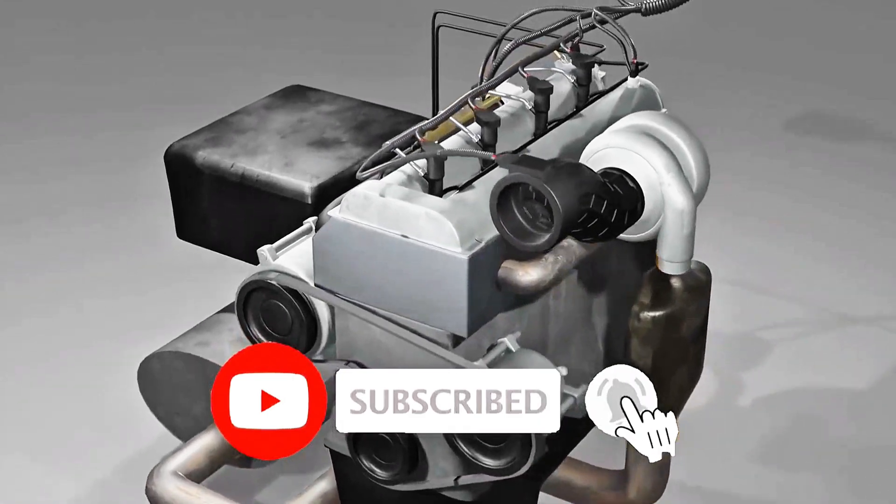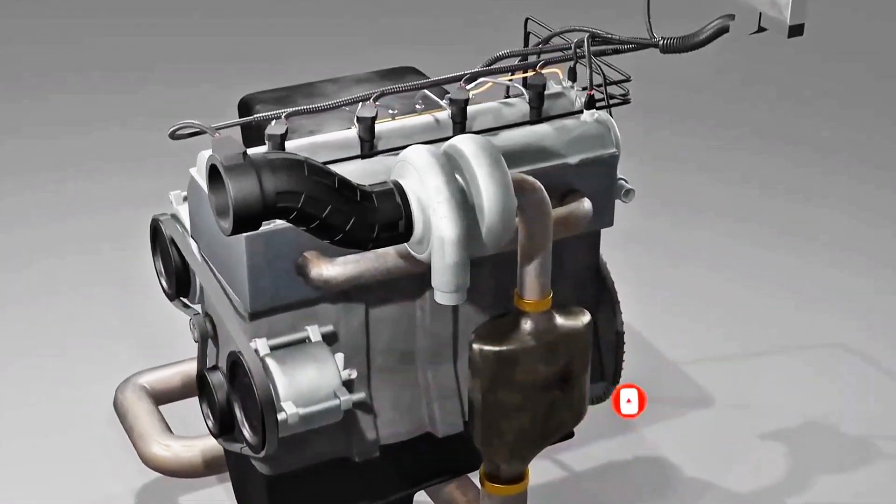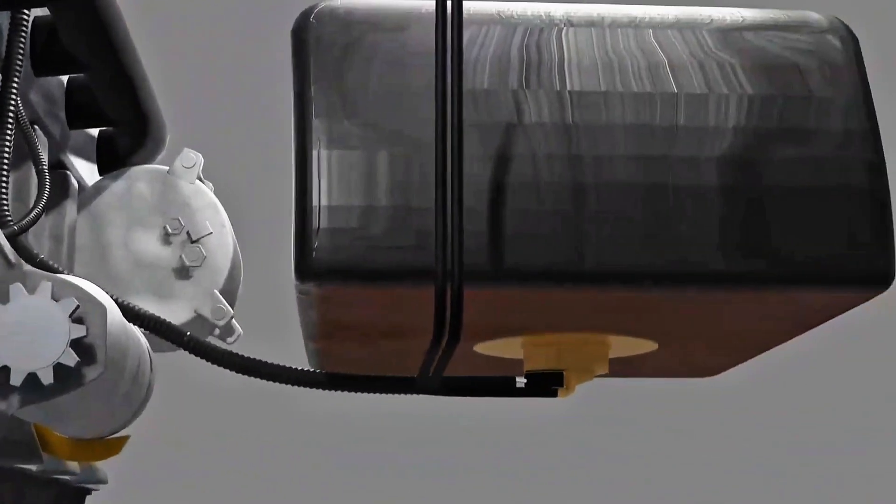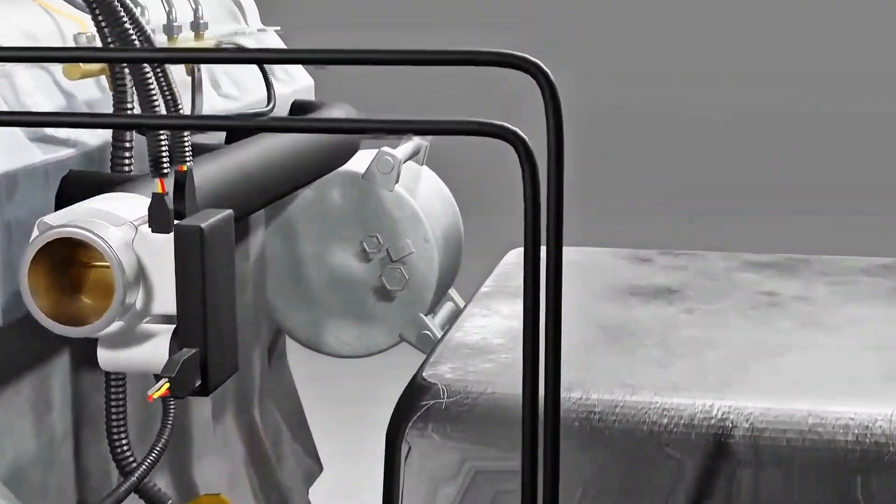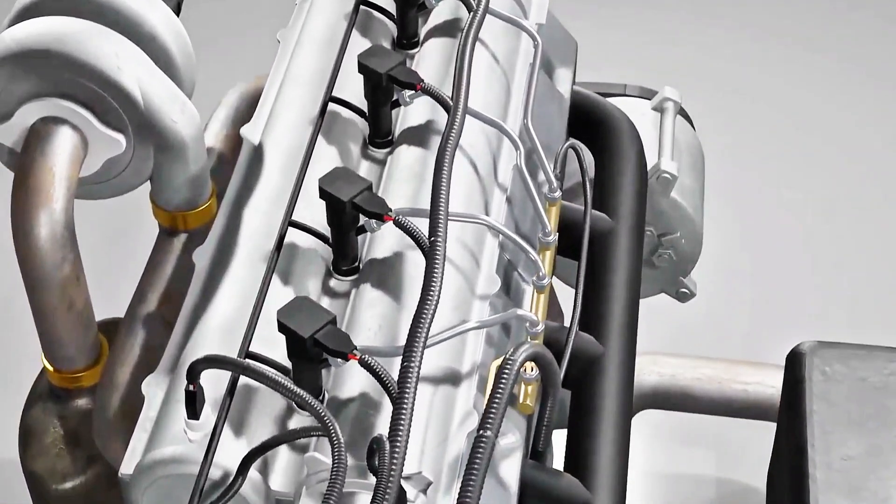Common rail is a mechanism in a diesel engine that regulates the distribution of diesel fuel to the combustion chamber electronically. If in a gasoline engine there is a system called EFI, then in a diesel engine it is called common rail.